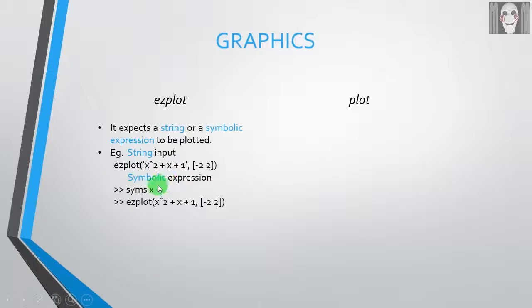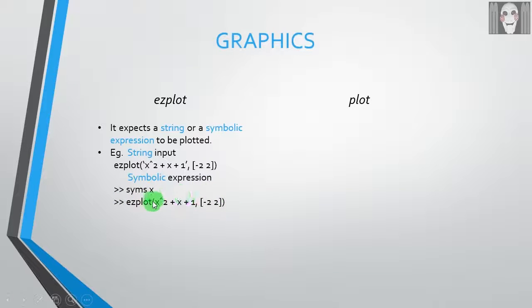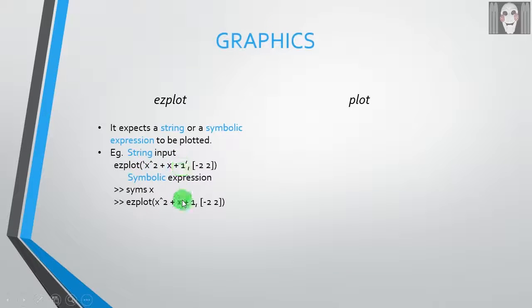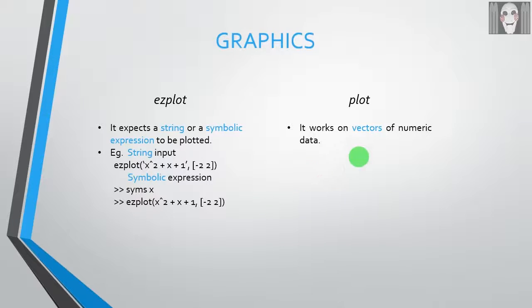When the input is a symbolic expression, you have to first define the variable as a symbol. The syntax is: syms x, followed by ezplot with parenthesis containing your expression and the x limits. Note that the string input uses single quotes, whereas the symbolic syntax does not have quotes.